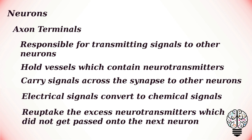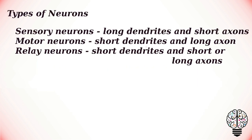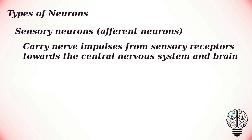Although there are billions of neurons and vast variations, neurons can be classified into three basic groups depending on their function: sensory neurons, which have long dendrites and short axons; motor neurons, which have short dendrites and long axons; and relay neurons, with short dendrites and short or long axons.